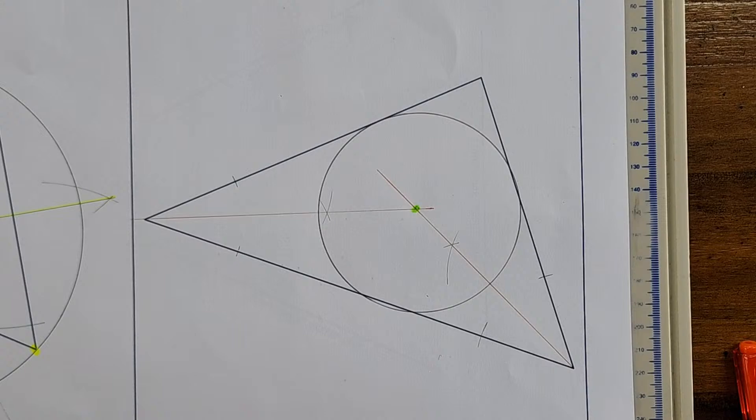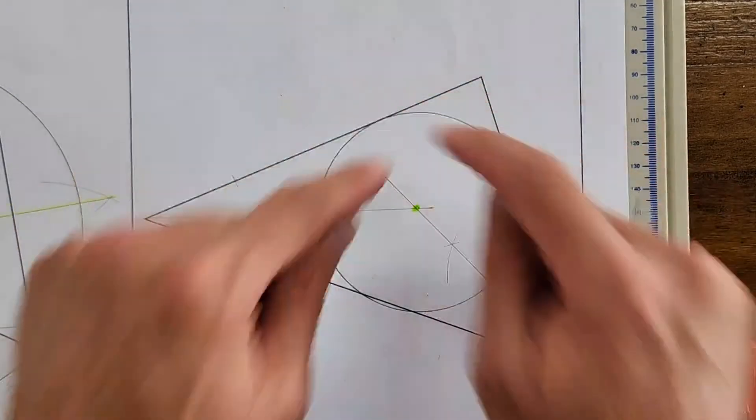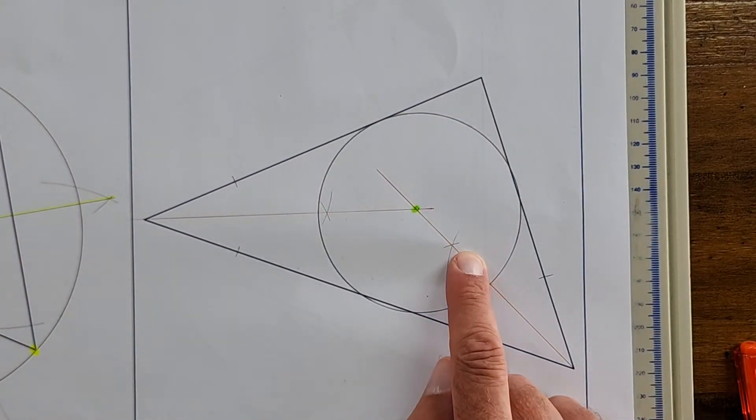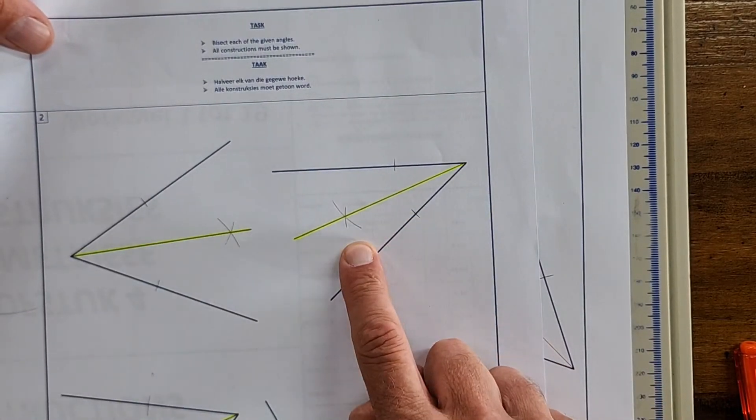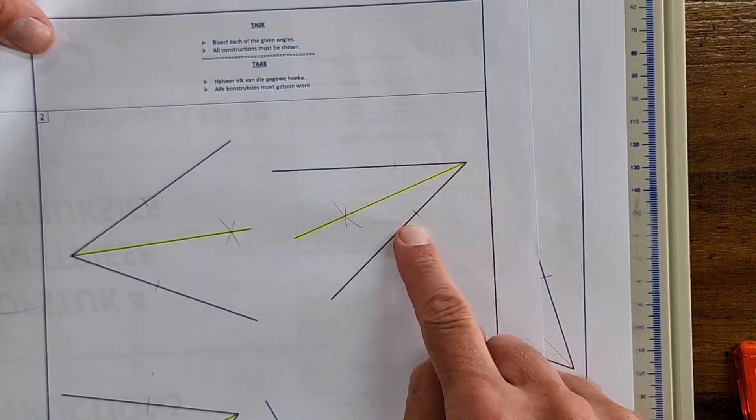I applied this technique of bisecting a given angle. Picked any one of the three, two of the three, got the center that now helped me to get my inscribed circle.